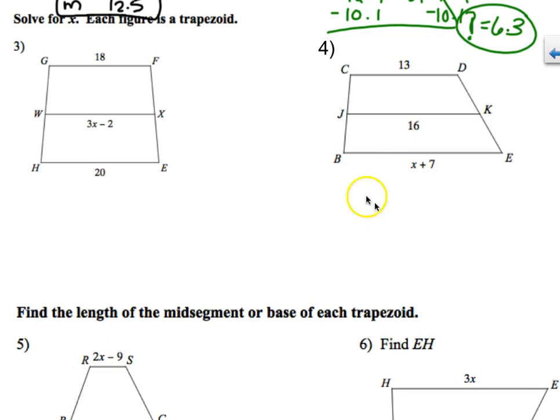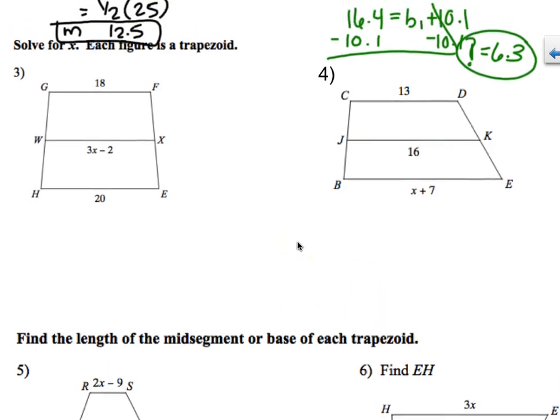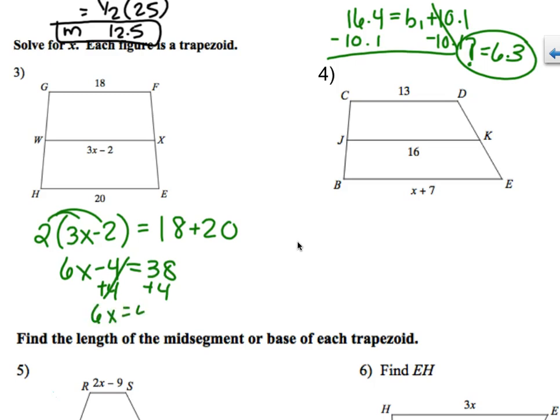I'm going to try the left side and you are going to try the right side. Number three, solve for X. Same thing, but variables. I'm going to use the second theorem and double the midsegment. So two of the midsegments are going to equal base one plus base two. I think that would be easier for me. Then I would distribute and get 6X minus 4 equals 38. Add 4. 6X. Divide by 6 and then X would be 7.